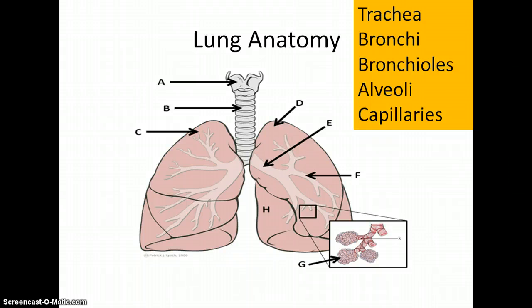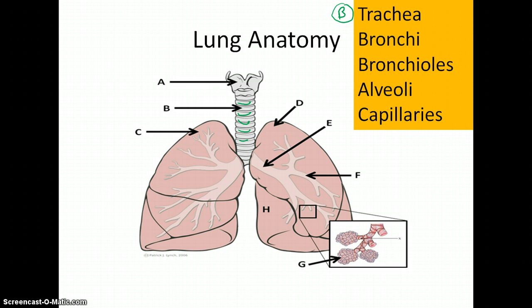We'll start with the trachea — that's letter B on this diagram. The trachea has cartilaginous rings to help keep it fully open at all times. You can feel those on yourself through your skin and neck. From there it's really just a series of tubes that get smaller and smaller.